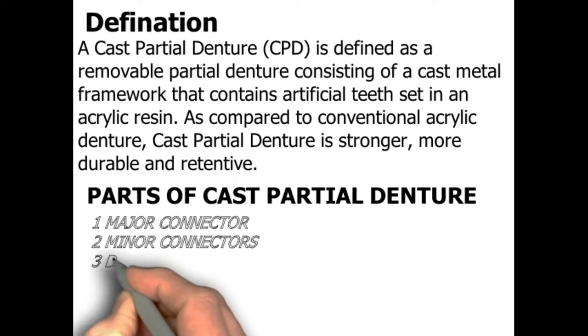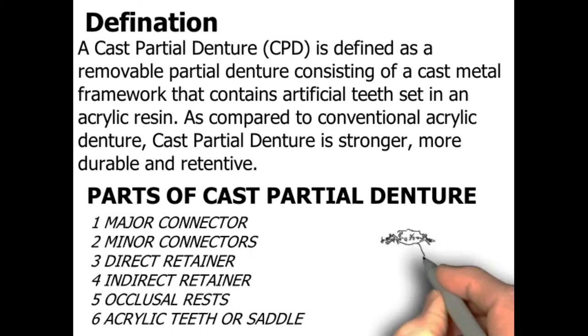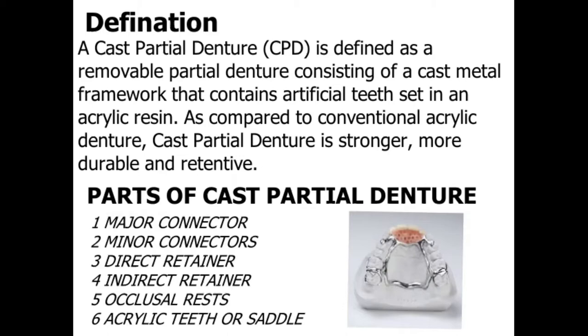Parts of cast partial denture — there are six parts: number one, major connector; number two, minor connectors; number three, direct retainer; number four, indirect retainer; number five, occlusal rest; and number six, acrylic teeth or saddle.